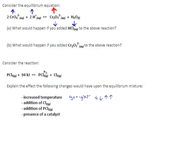If we add chlorine — that's our stress, we've put in some excess chlorine — what does the system do? It'll want to use up chlorine, and if it's using up chlorine, it must use up everything else on that same side. It will produce phosphorus pentachloride and it will produce heat. So this one will go left — the equilibrium shifts towards the left — meaning reactants increase and products decrease.